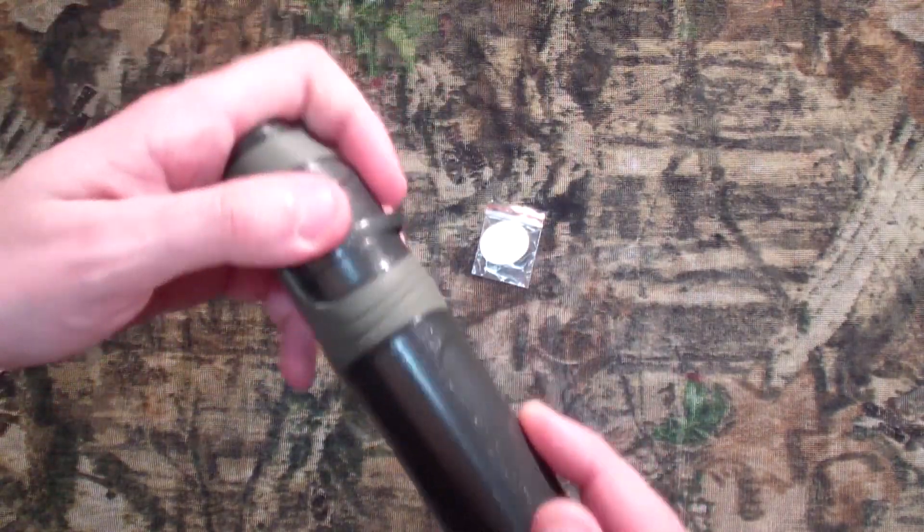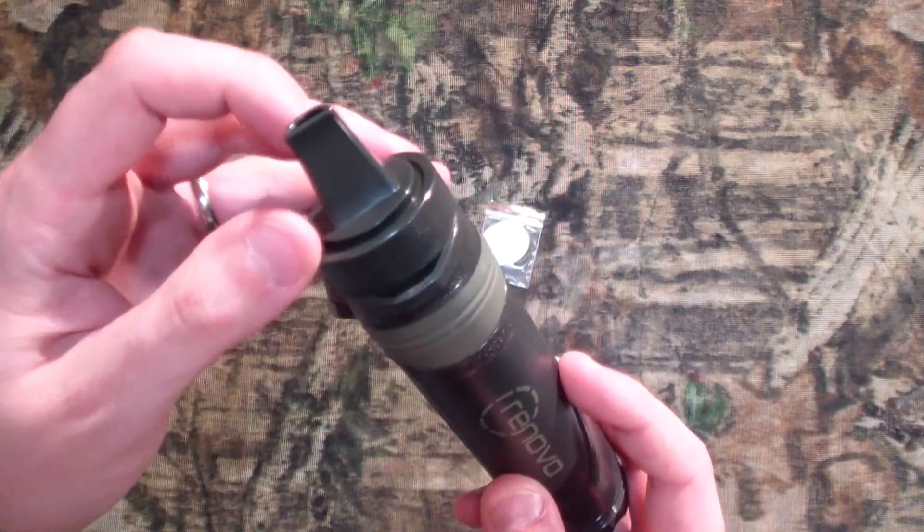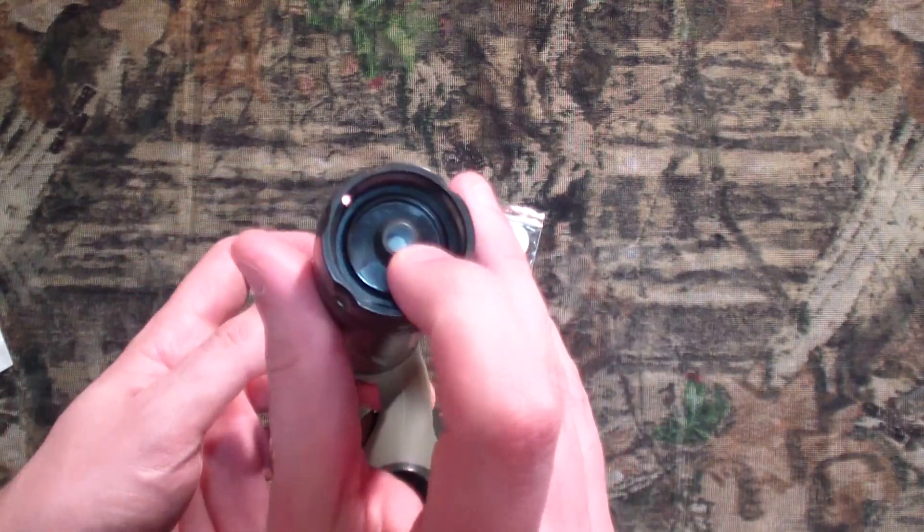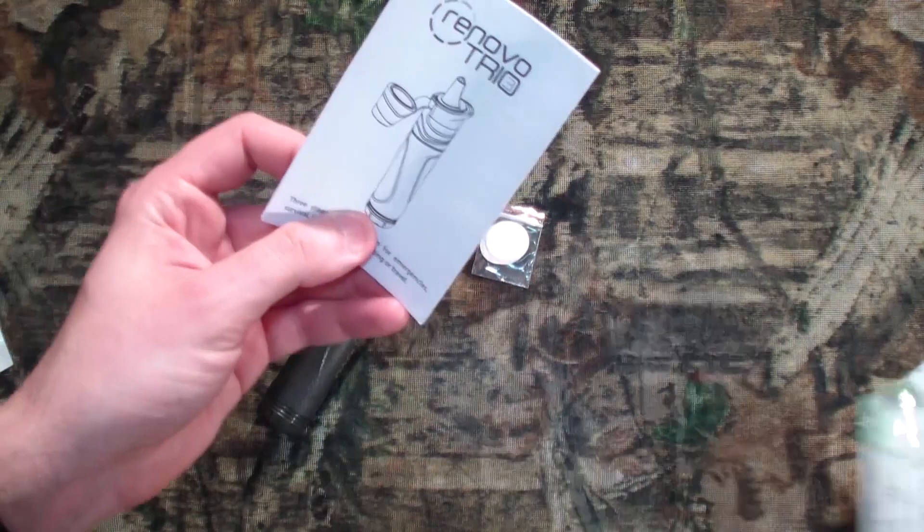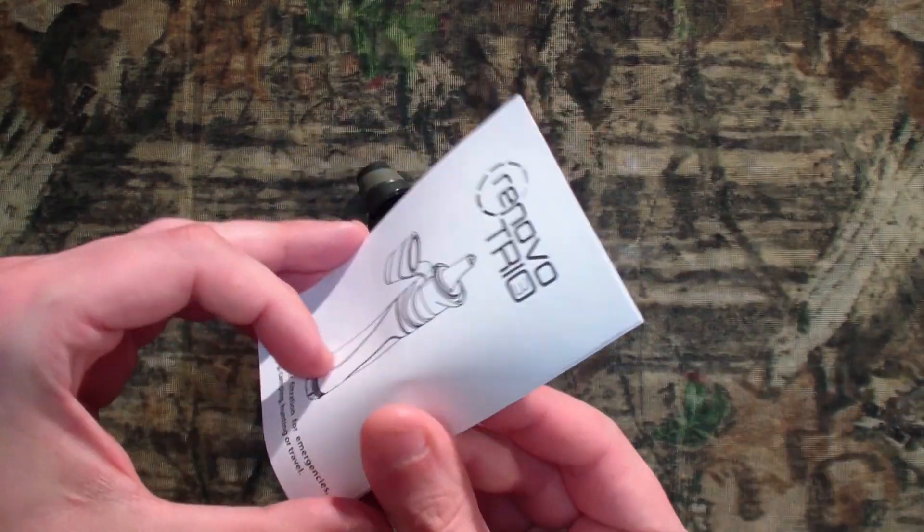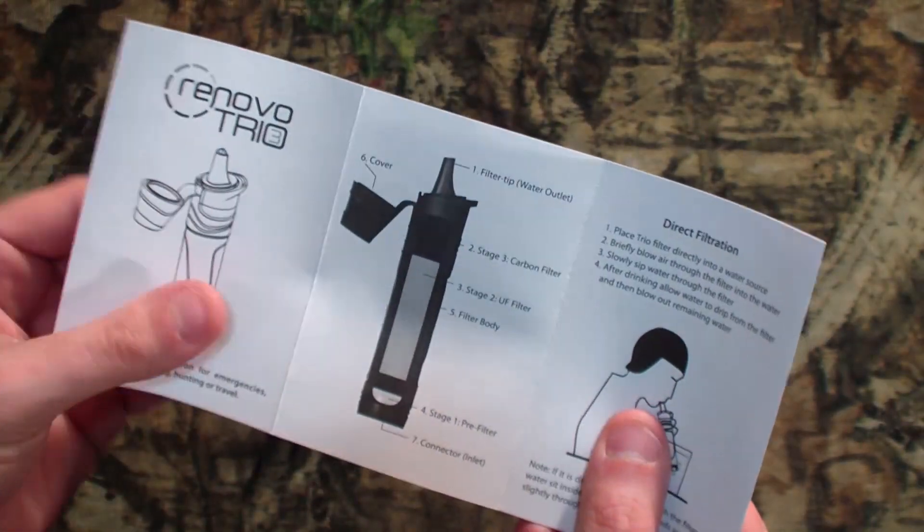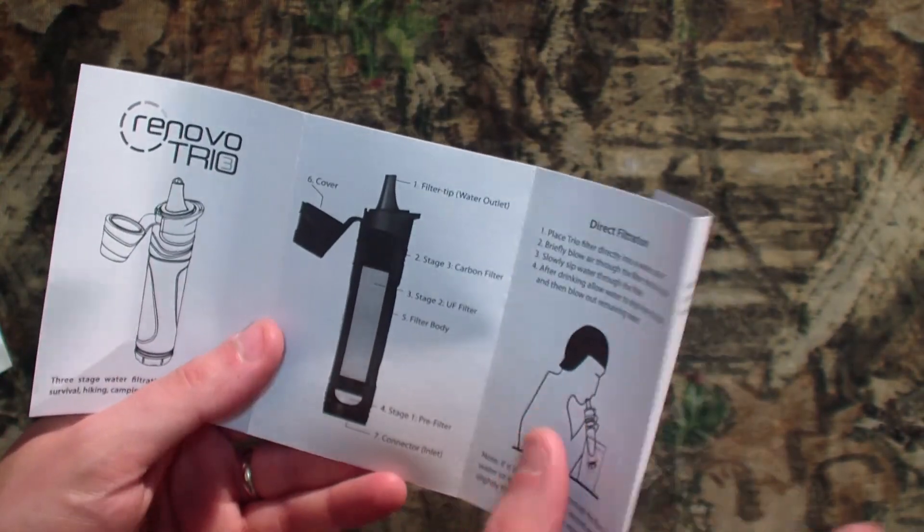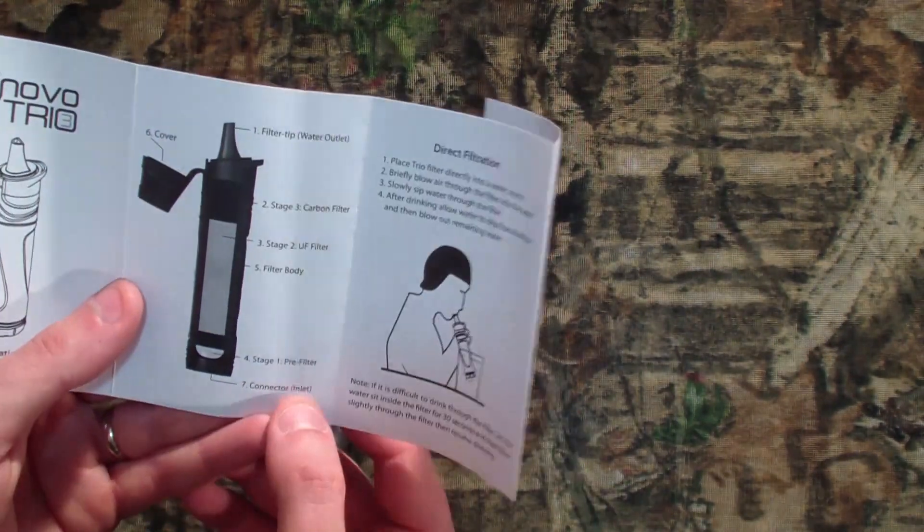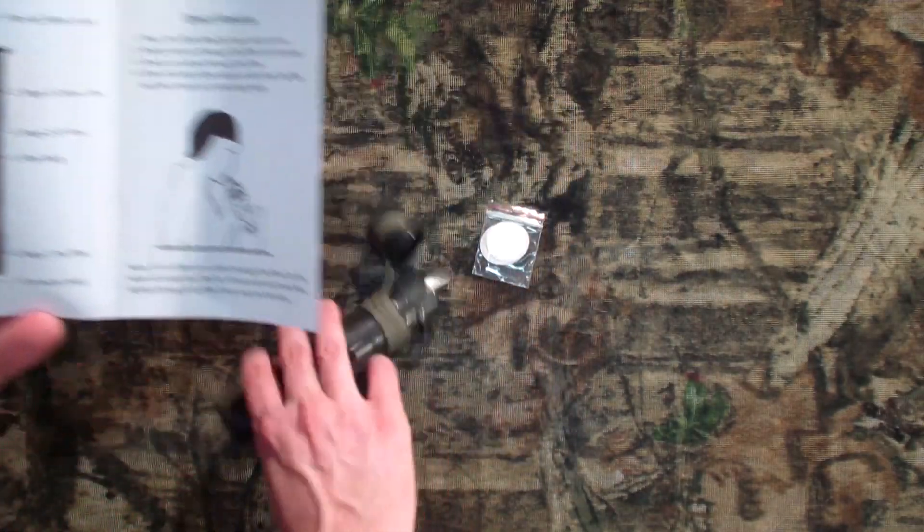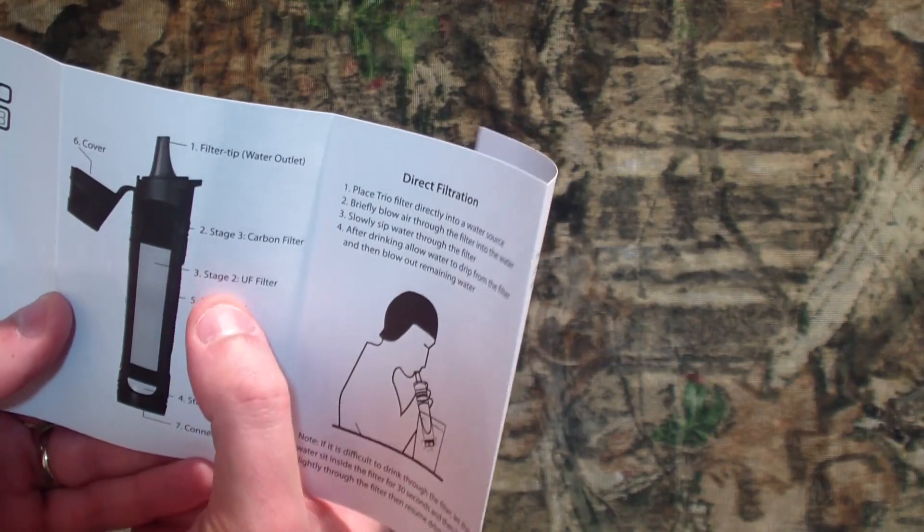So this cap is connected, that's a plus. I hate losing caps, so that's nice. So that pops off. There's your tip there. And it looks like dirty water hookup there. All right. You know what, before I get too far, let's actually just look at the booklet. For emergency, survival, hiking, camping, hunting, or travel. Filter tip, that's what we were just looking at. Connector inlet for the dirty water. Filter body.